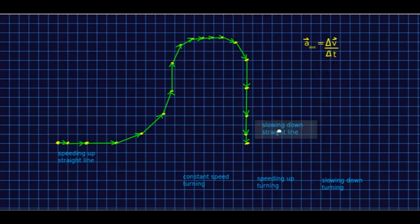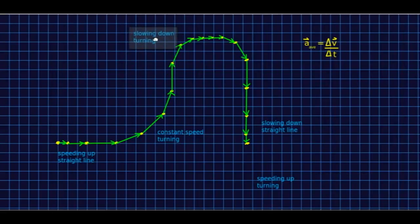So there's a part here which is speeding up in a straight line and there's a part over here where this object is slowing down while moving in a straight line. There's a part here where it's going around a corner at constant speed. There's a part up here where it's going around a corner while slowing down. And there's a part up here where it's going around a corner while speeding up. So that's all the possibilities.